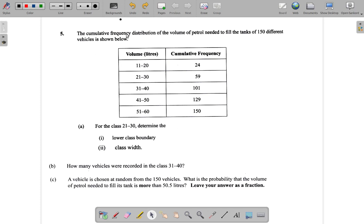Let's see question 5. The cumulative frequency distribution of the volume of petrol needed to fill the tank of 150 vehicles is shown below. It's volume of petrol on the left and cumulative frequency on the right of the table. Remember, cumulative means to accumulate, to pile up. It keeps adding up until it reaches 150 in this case.